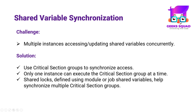One potential challenge with shared variables is managing concurrent access by multiple process instances. To address this, we use critical section groups, ensuring that only one process instance can execute the group at any given time. This mechanism prevents unpredictable values resulting from simultaneous updates. Shared locks, established through module or job shared variables, offer a solution for synchronizing multiple critical section groups.